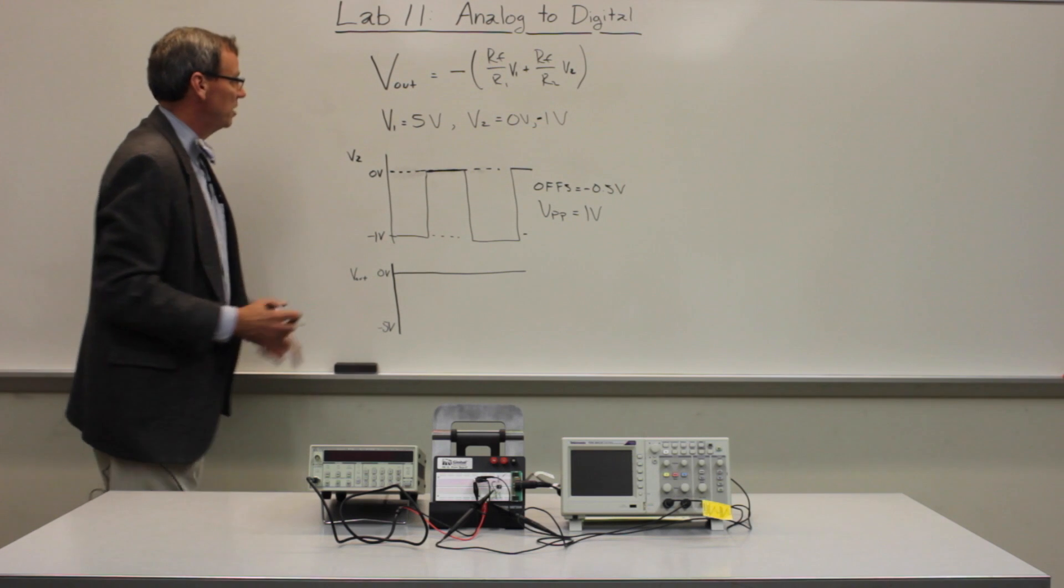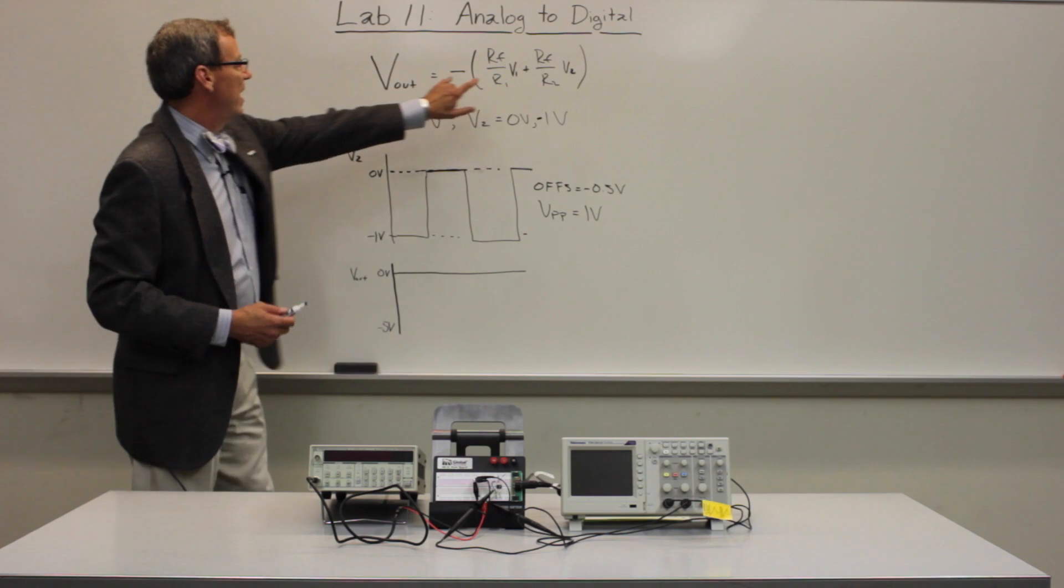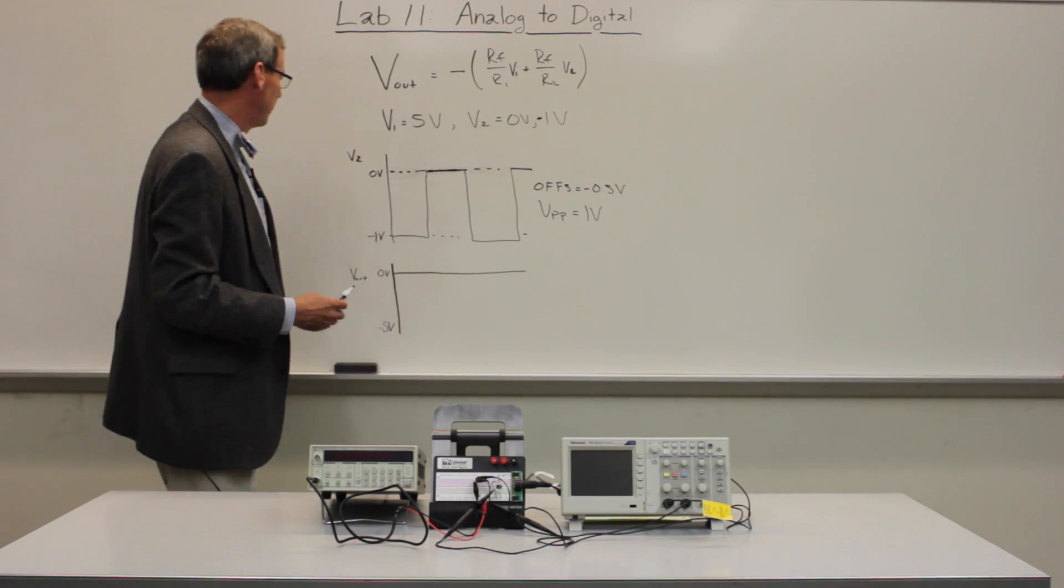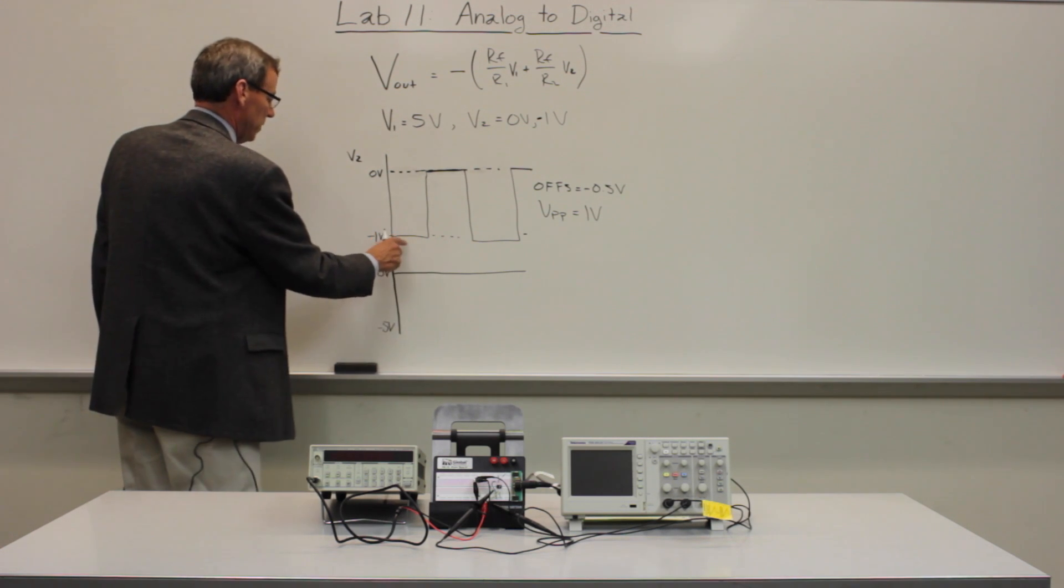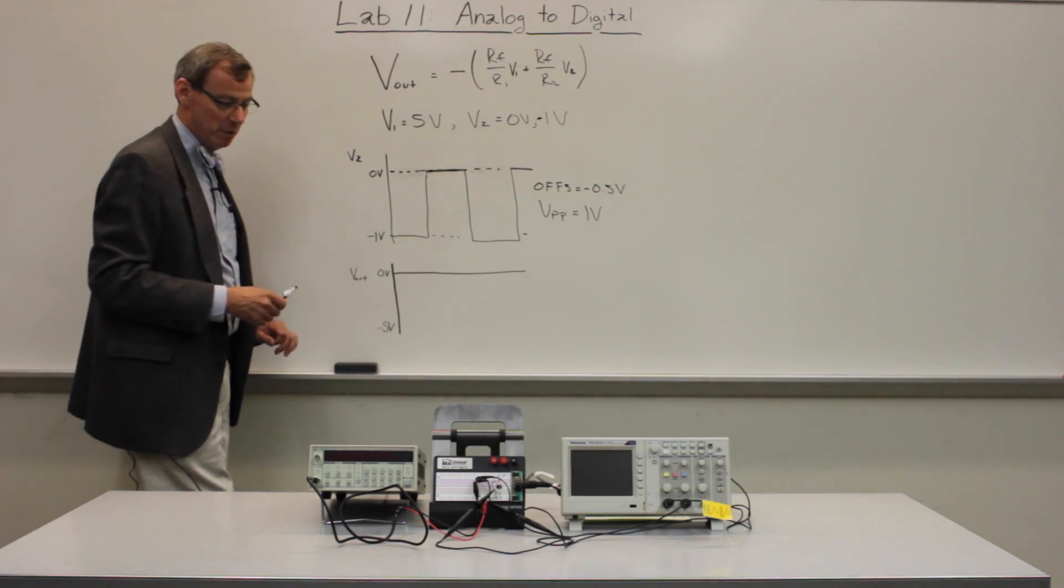The output we want to be a square wave that goes between 0 volts and minus 5 volts. So you've got to analyze this circuit and figure out appropriate values of the resistors to make that work. And you'll also have to figure out is the minus 5 volts going to be when the signal's at minus 1 volt or when it's at 0 volt.